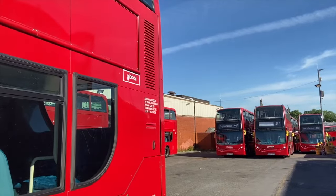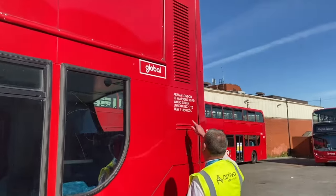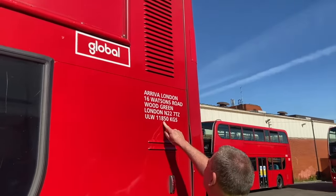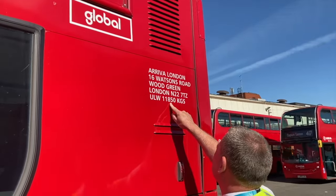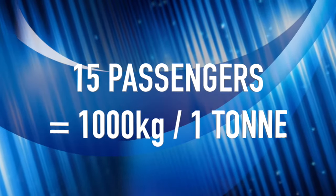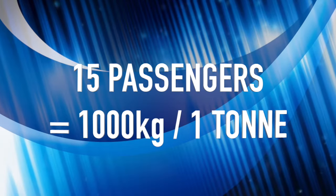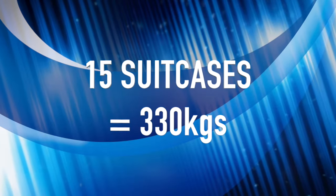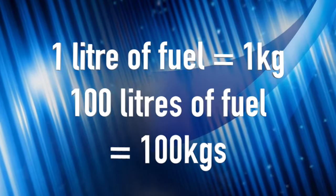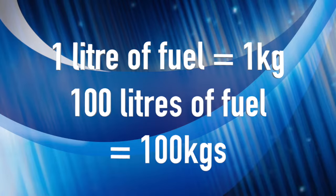You will need to indicate to the examiner where you would find the unladen weight of the vehicle, which is normally on the near side of the vehicle. You will also need to understand the weight of passengers and their luggage as well as fuel. 15 passengers is approximately 1,000 kilograms or 1 ton. 15 suitcases is approximately 330 kilograms and 100 litres of fuel is approximately 100 kilograms.